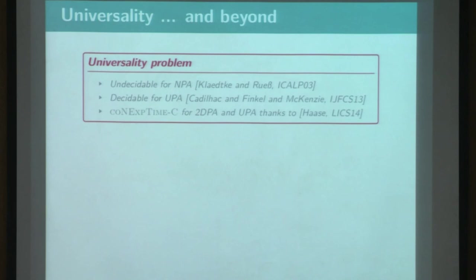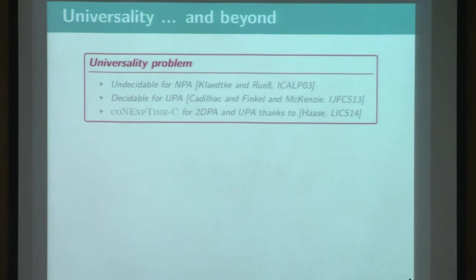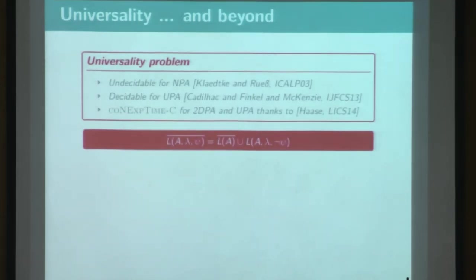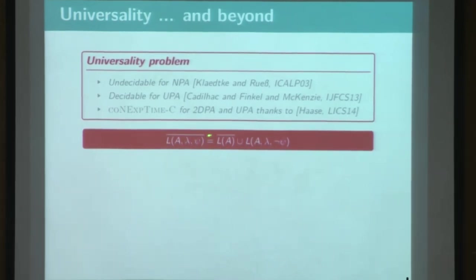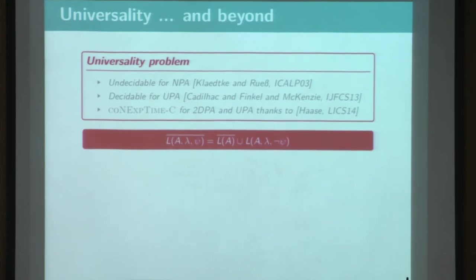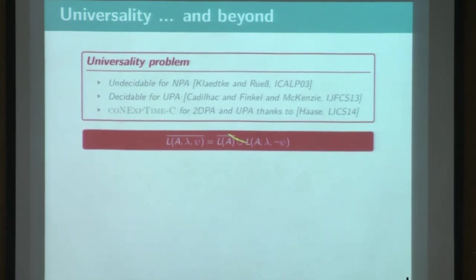However, for unambiguous Parikh automata, since there is only one accepting run, this is decidable for universality, and this is also closed under complement. The intuition is that the complement of a word is rejected, either if the underlying automata is rejected, or even if the formula is rejected. But this is only true if there is one accepting run. And we provide the tight complexity for the universality, thanks to these results.